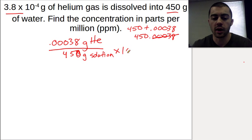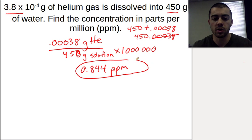We'll multiply by a million at the end to give us parts per million. If we just divide this out and then multiply, this gives us about 0.844 parts per million of helium in the solution.